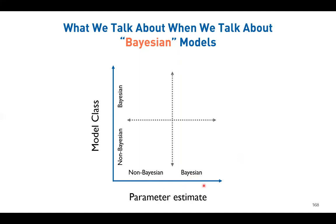This distinguishing - non-Bayesian versus Bayesian - is with respect to the method used for model estimation. So in short, we have one dimension: parameter estimation or model estimation. Another dimension is the model class - whether the Bayesian part is embedded in the model or not. This gives us a typical two-by-two framework with four total combinations. We could have a non-Bayesian model with non-Bayesian parameter estimation, a non-Bayesian model using Bayesian parameter estimation, a Bayesian model estimated in a non-Bayesian way, and finally a Bayesian model with Bayesian parameter estimation.